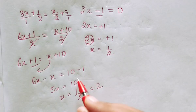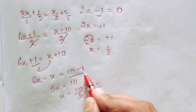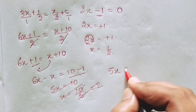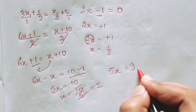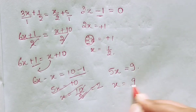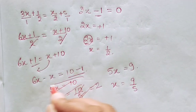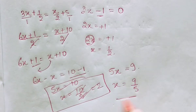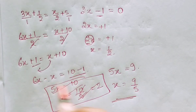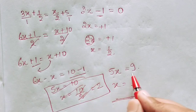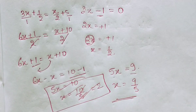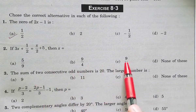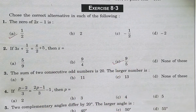Sorry, there is a mistake. We should have subtracted 1 from 10 — that calculation was done incorrectly. So 5x = 10 − 1 = 9, giving x = 9/5. Always be careful in calculations: 6x minus x gives 5x, and 10 minus 1 gives 9. So the correct answer is option C, which is 9/5.